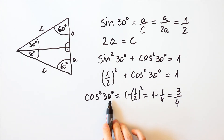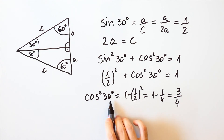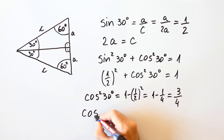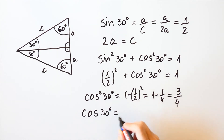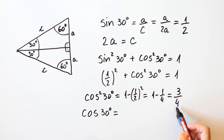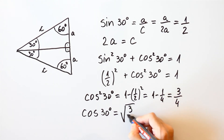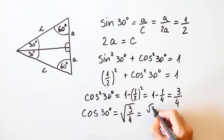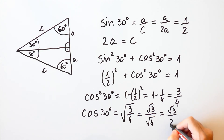And 30 degrees is an acute angle, which means that the cosine of 30 degrees is positive. So, the cosine of 30 degrees is equal to the square root of 3 over 4, which is equal to the square root of 3 over the square root of 4, and that is equal to the square root of 3 over 2.